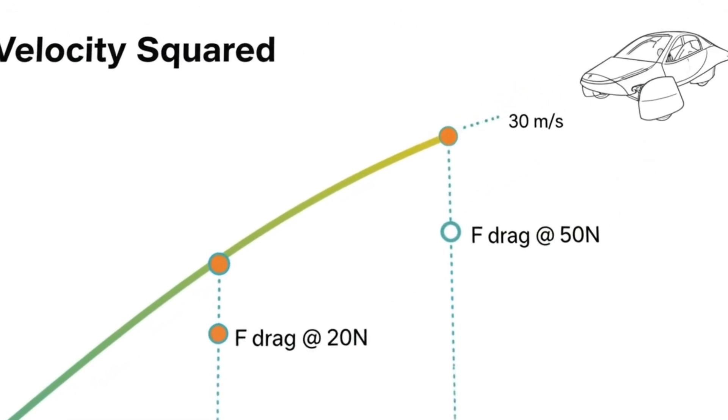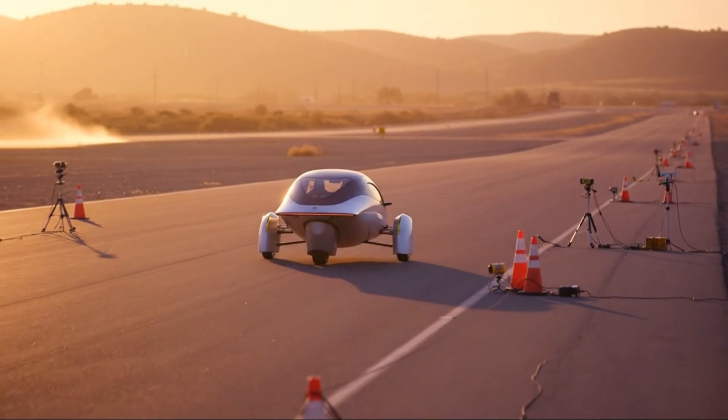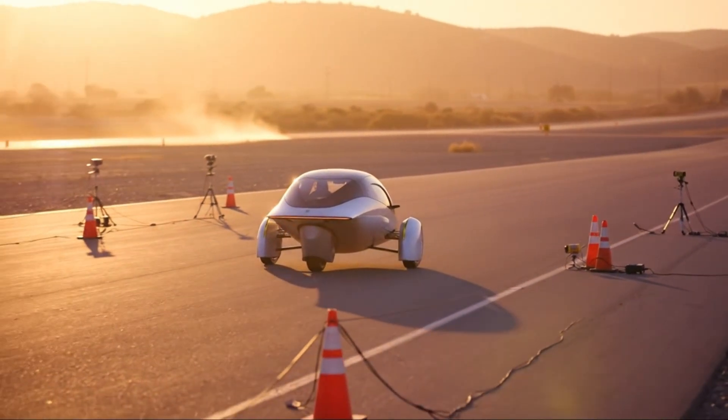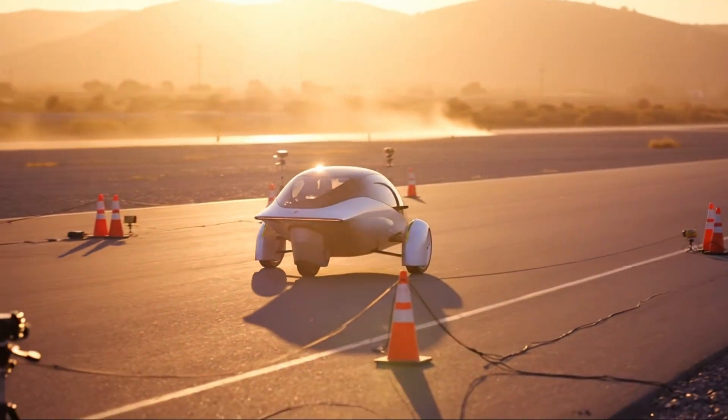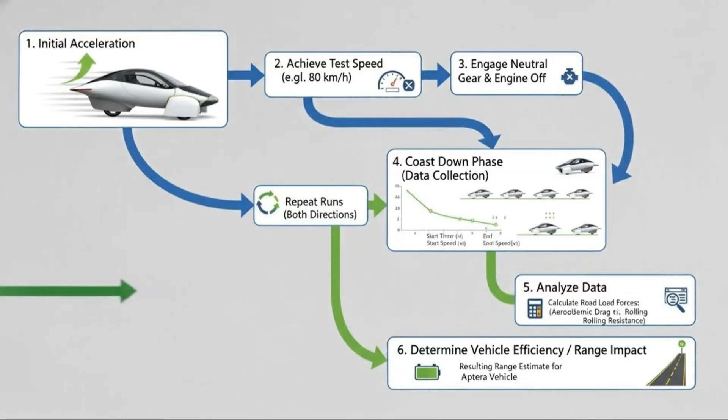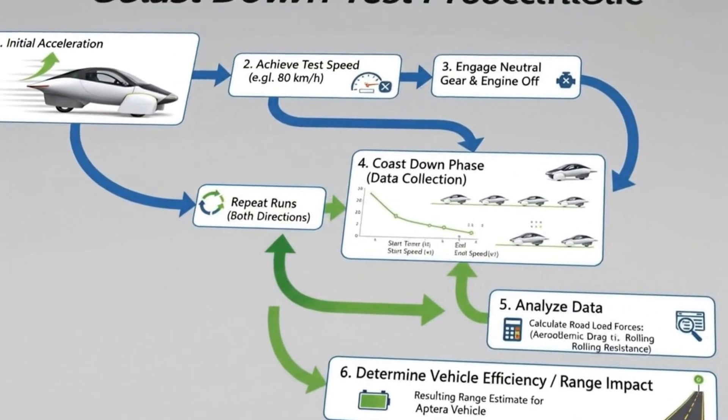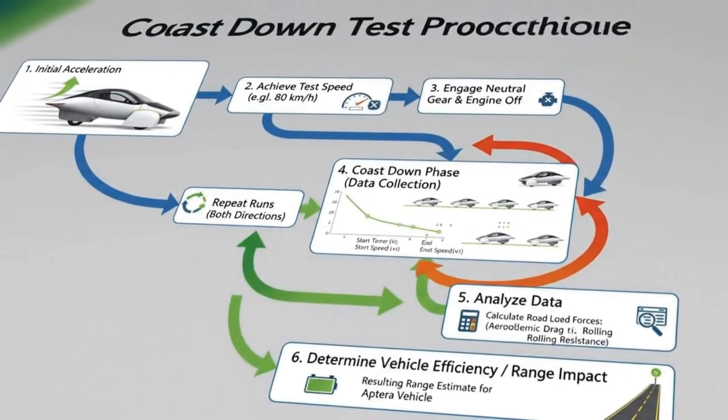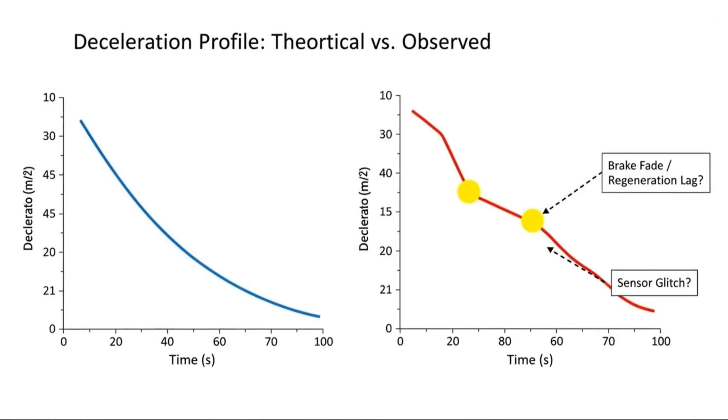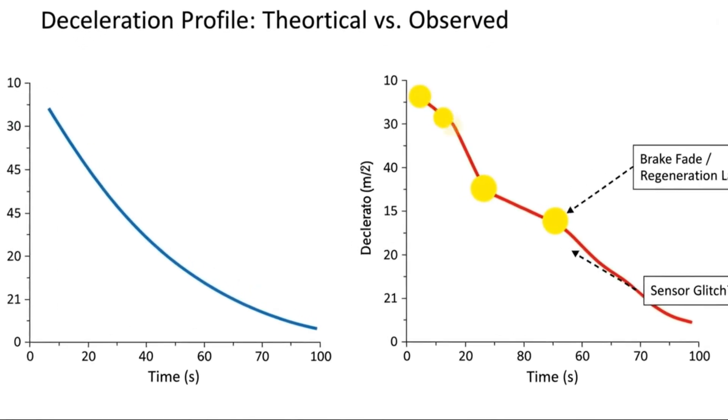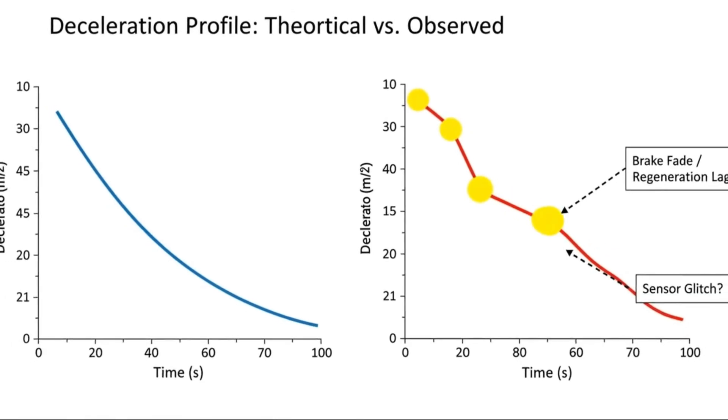Yet the vehicle's innovative thermal management system dissipates heat through its composite skin rather than relying on drag-inducing radiators and fans. Driving style plays a role, but low mass and regenerative braking soften the impact of aggressive inputs. Even terrain and headwinds have less influence when efficiency margins are this wide.